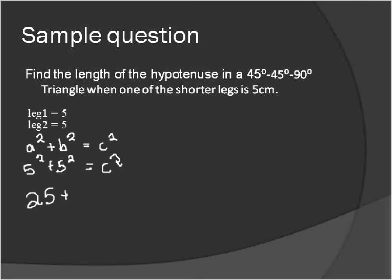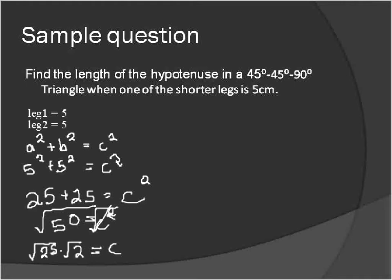And 5 squared is 25, 5 squared again is 25, c squared. We'll take the square root of both sides of this equation to help us solve for c. And with the square root of 50, we're going to factor out our perfect square of 25 and 2.